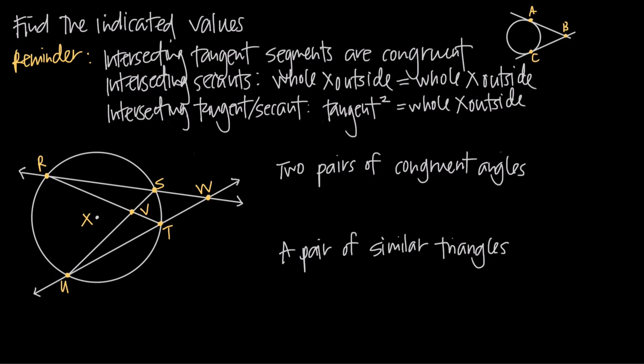In this video, we're talking about the interesting things that happen when we have intersecting tangent and secant lines on a circle. We have a couple of reminders here that we're going to be applying to this example problem.